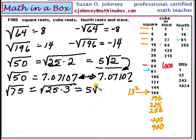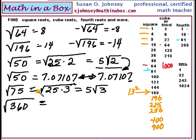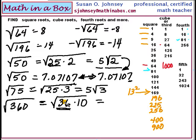Let's try a larger number — what about 360? You want to find the largest number on the list that will divide evenly into 360. It's 36. So let's change this to 36 times 10. The square root of 36 is 6. Do we know the square root of 10? No. So it stays underneath the square root symbol. 6 times the square root of 10 is the square root of 360.